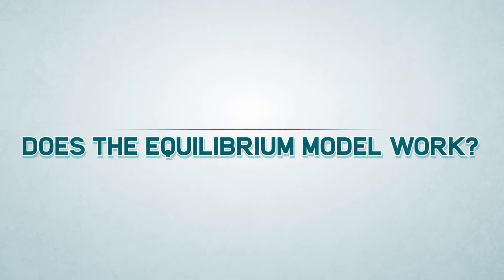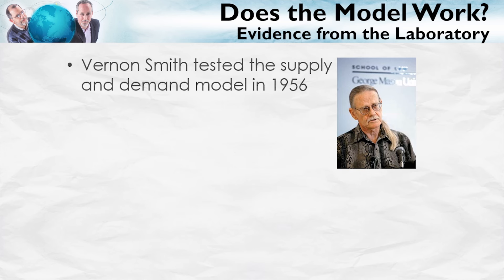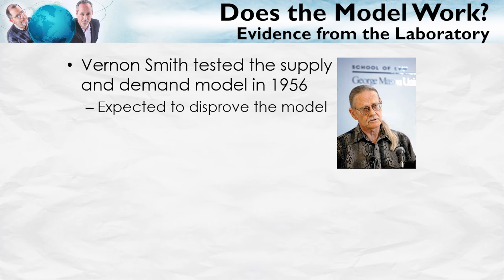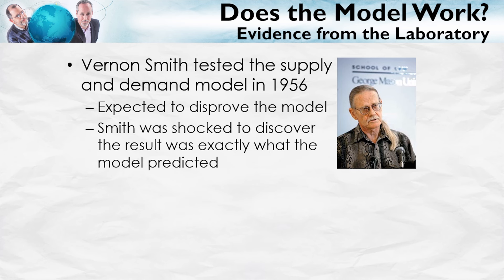Now that we understand supply and demand and the equilibrium process, we can ask: does the model work? Some of the most impressive evidence was developed in 1956 by Vernon Smith, one of the founders of experimental economics. Smith actually expected that his lab experiments would disprove the model, but he was shocked when time and time again the model predicted exactly what happened. Vernon Smith was awarded the Nobel Prize in Economics in 2002. Let's take a look at what he did.